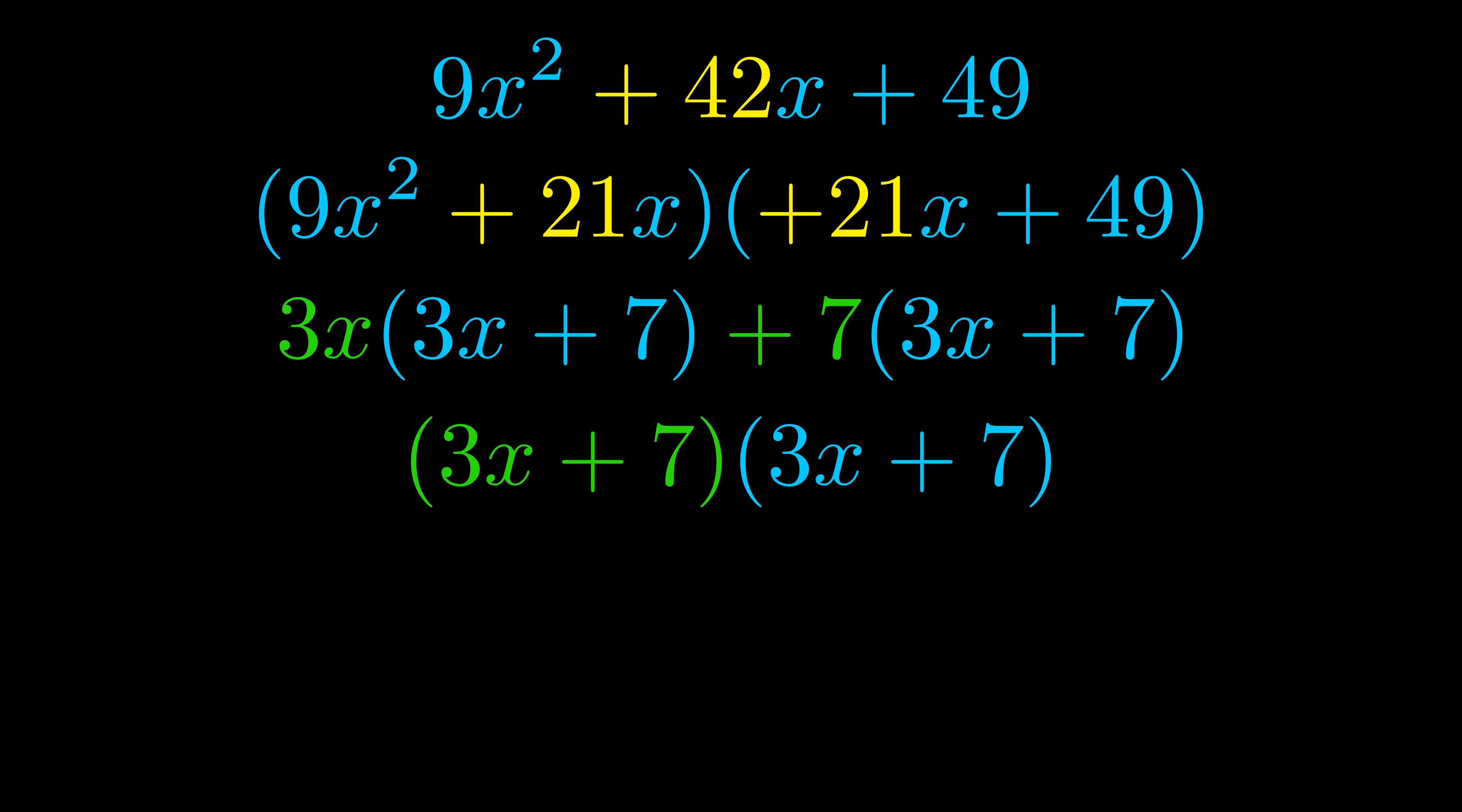Those blue values will become one of our factors and we will combine the two green values, the GCFs that we pulled out, to get the other one. And that is our fully factored equation.